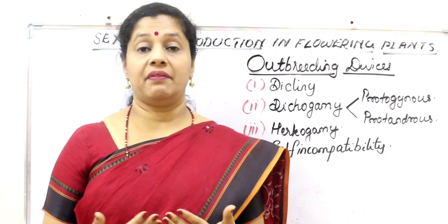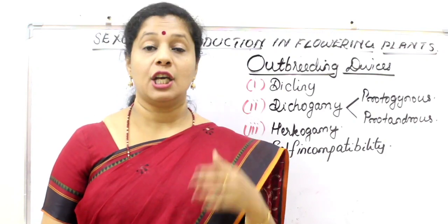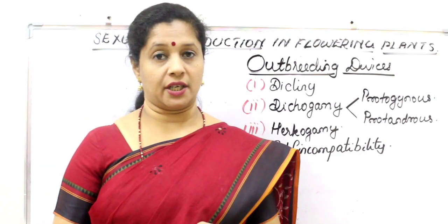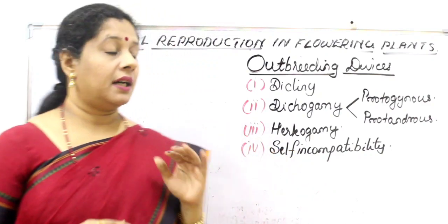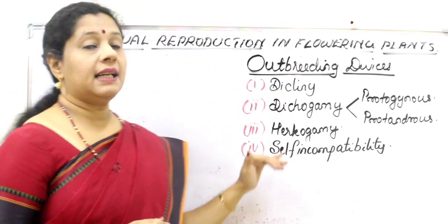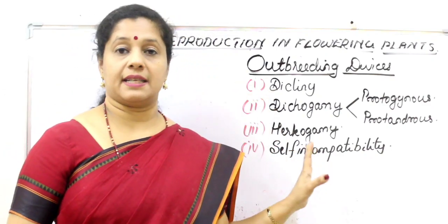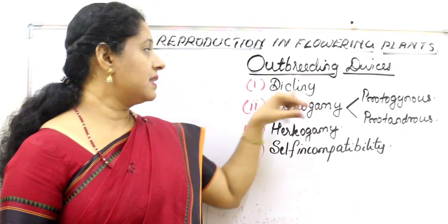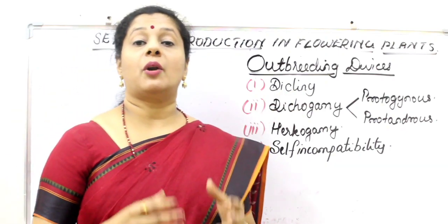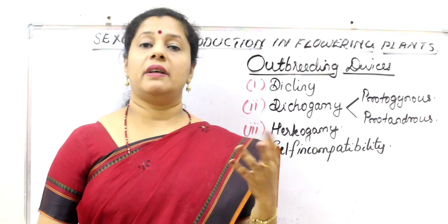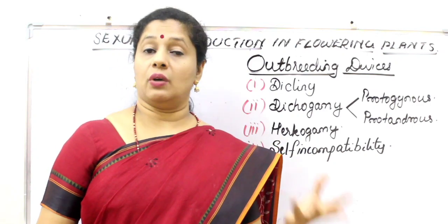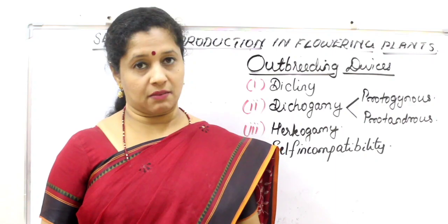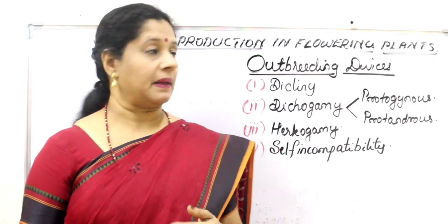Plants have different strategies to discourage self-pollination and encourage cross-pollination — called outbreeding devices. The first is diclinism: the production of unisexual flowers. If there are only unisexual flowers, self-pollination is not possible.